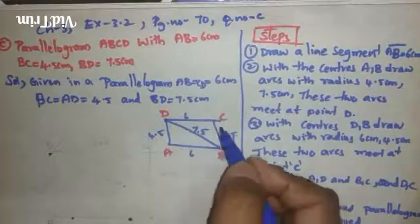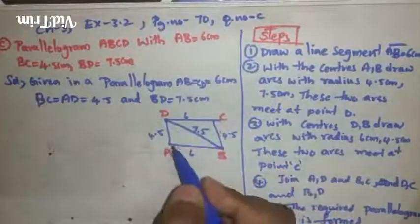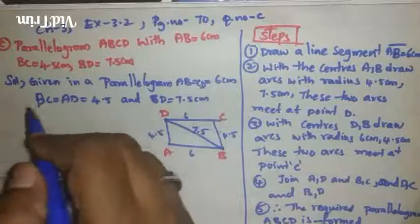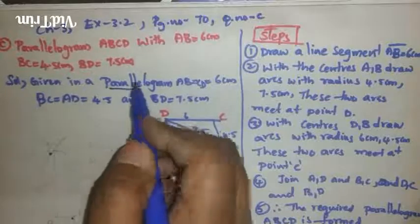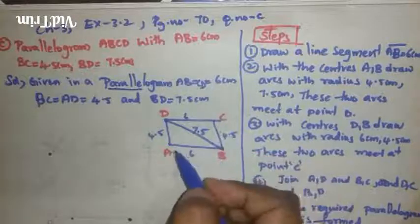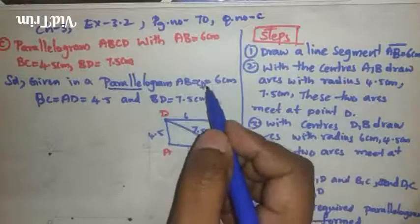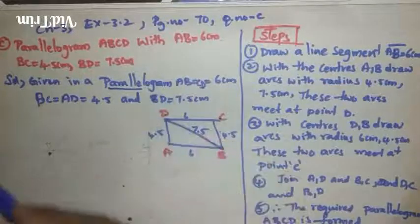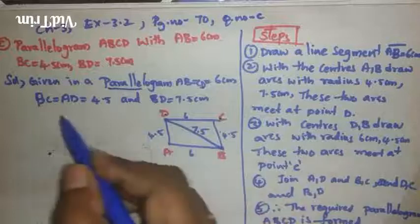BC = 4.5 centimeters and BD = 7.5 centimeters. Given in a parallelogram, we already know opposite sides are equal. Here only AB is given, so what is the CD value? CD is 6 centimeters. AB and CD are both equal.